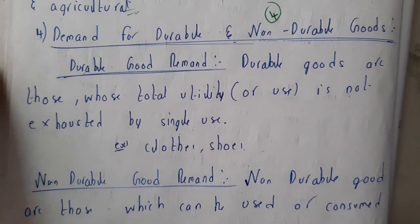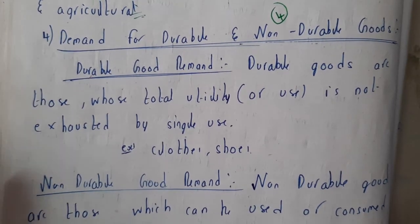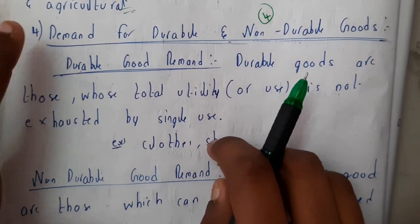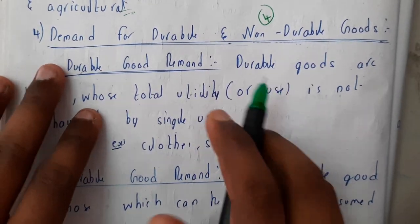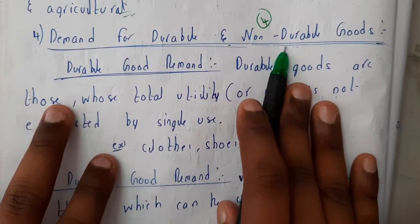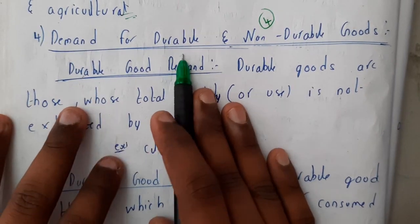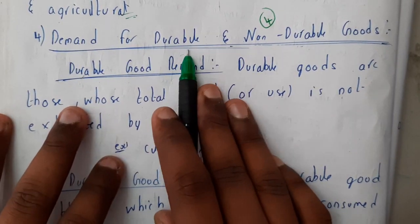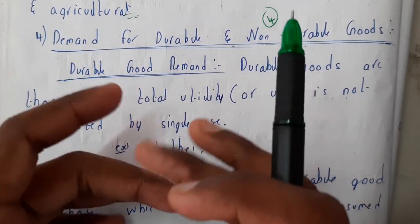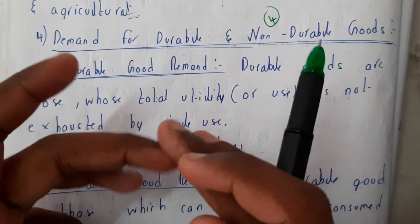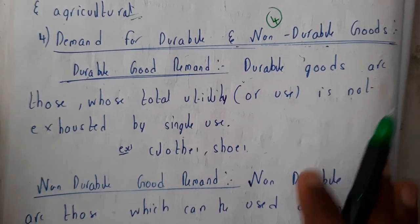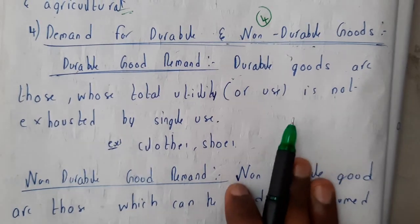Hello guys, we are back with our next lecture. In this lecture, let us continue the types of demand. The fourth type are durable and non-durable goods. Durable, from the name itself, means they will last for a long time — we can use them again and again — whereas non-durable means they are only for single use or only for trials.